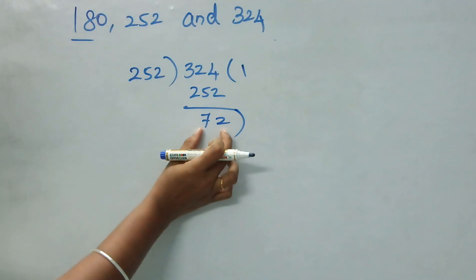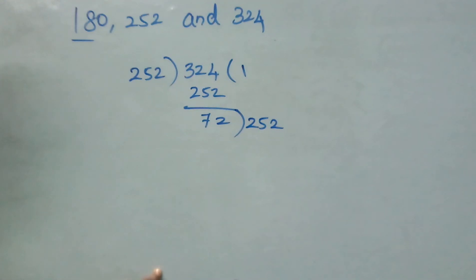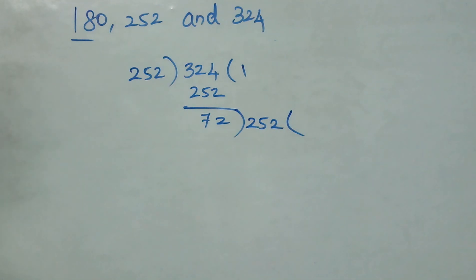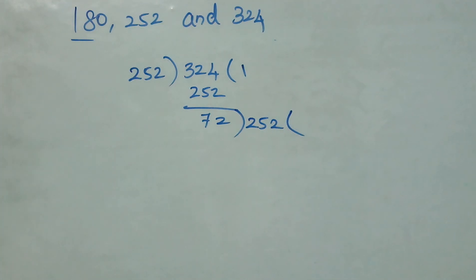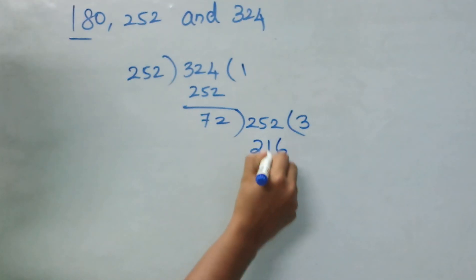Bring this 252 here as a dividend. Just see how many times it divides. 3 times. Okay. 3 2s are 6, 7 3s are 21.